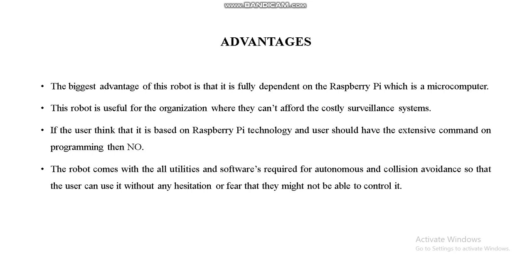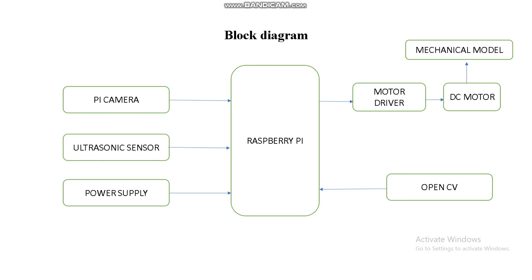This robot is useful for organizations that cannot afford costly surveillance systems. In the block diagram, the Pi camera interfaces with the Raspberry Pi for live streaming, and the ultrasonic sensor is used for obstacle avoidance. Depending on the Pi camera image processing and obstacle avoidance concepts, we can control our motors through the motor driver.